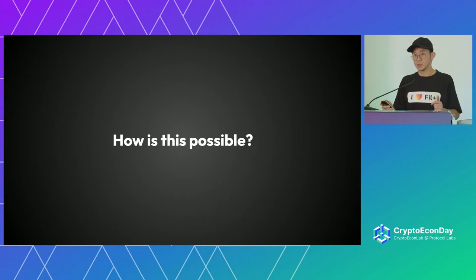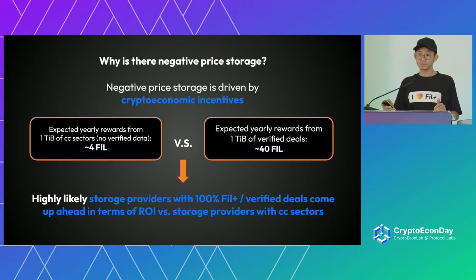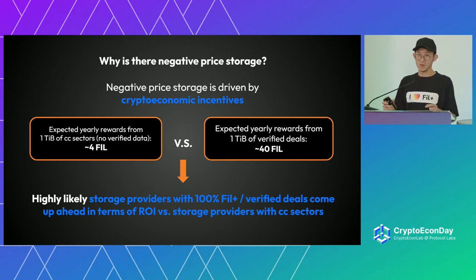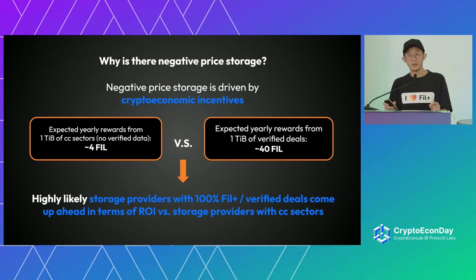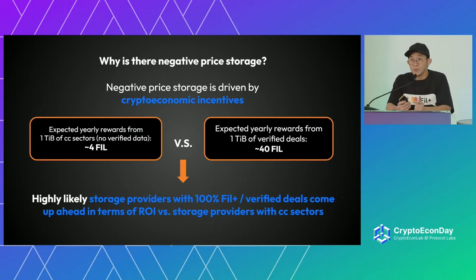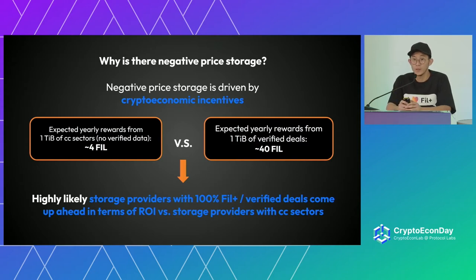Many people ask how this is possible, especially those not in Filecoin. The reason why it is possible is because of crypto-economic incentives, which is why I'm here talking about it at Crypto Econ Day. The expected yearly rewards from one tebibyte of a CC sector based on this week's statistics is around 4 Filecoin, whereas because of the Filecoin Plus program we can get 40 Filecoin per tebibyte if you store verified deals.